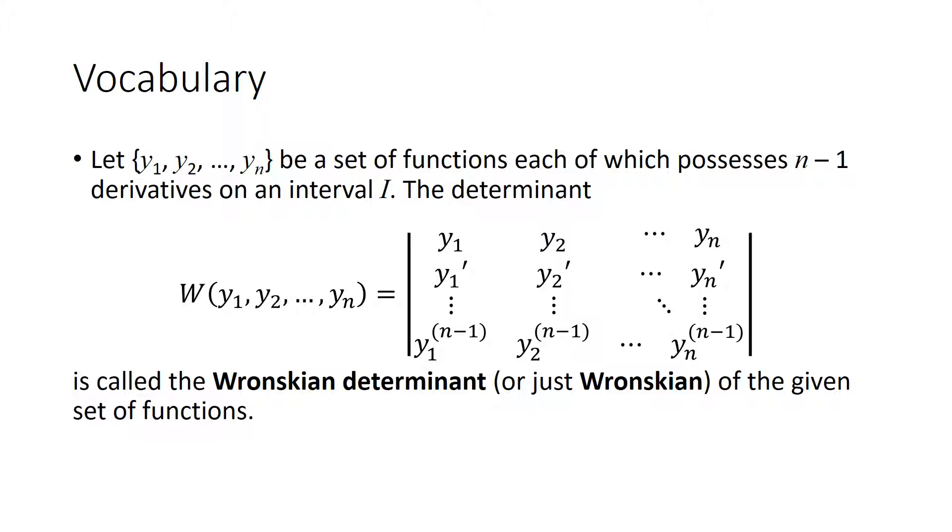And if you notice, the matrix is set up so that the set of functions makes up the first row. The first derivative of each function makes up the second row. The second derivative of each function would then make up the third row. All the way down to the last row of this matrix would be made up by the n minus 1 derivative of each function.